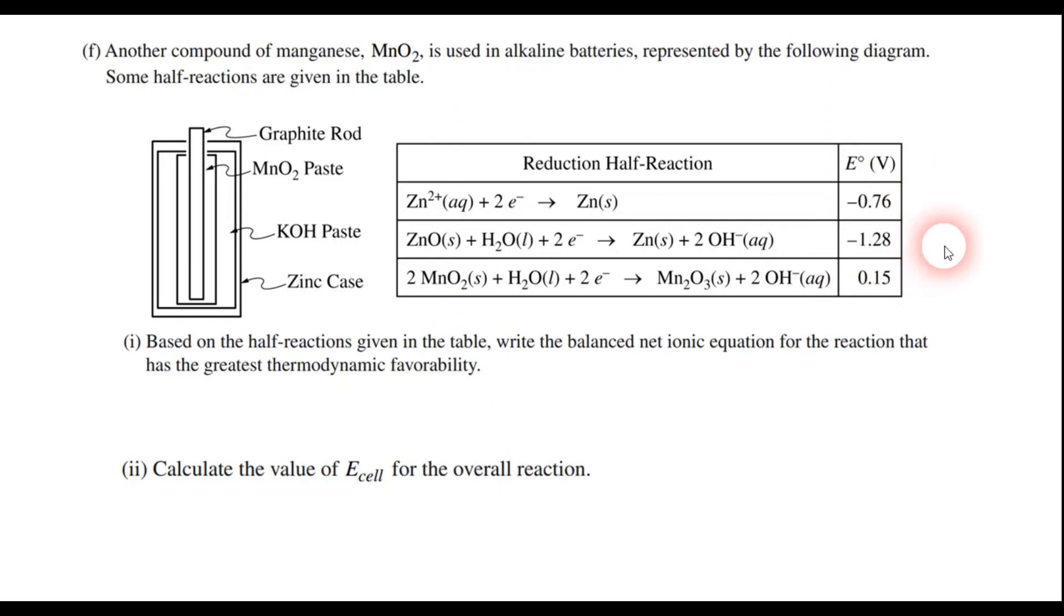Well, the way I think about this is think about these numbers on a number line. You've got the negative 0.76, the negative 1.28, and the positive 0.15 on a number line. Which two are farthest apart from each other? Well, when you visualize it that way, it becomes pretty obvious that the largest difference between these numbers would be those right there. Now, to be honest, to write the net ionic equation, I kind of do this backwards. I actually like to do E cell first, because it helps me to know which one I have to flip.